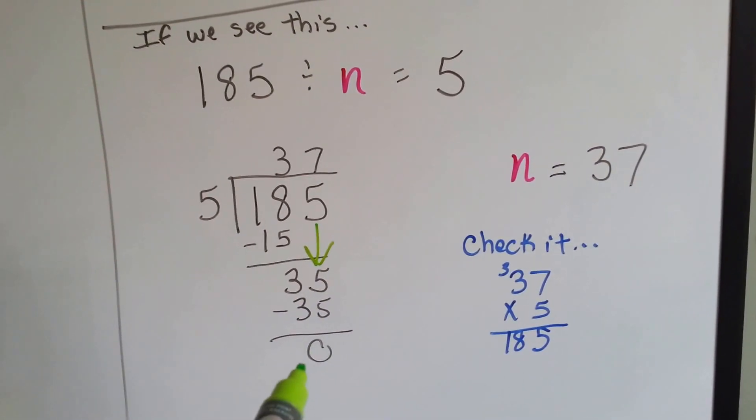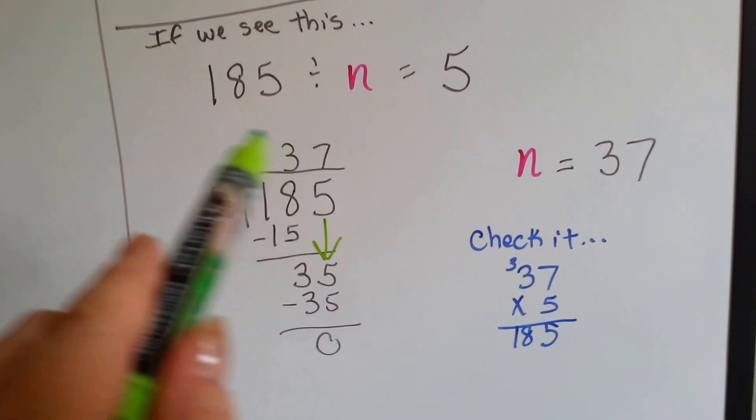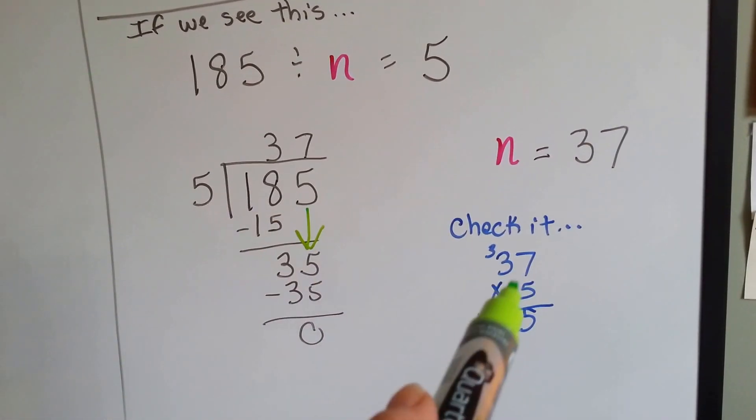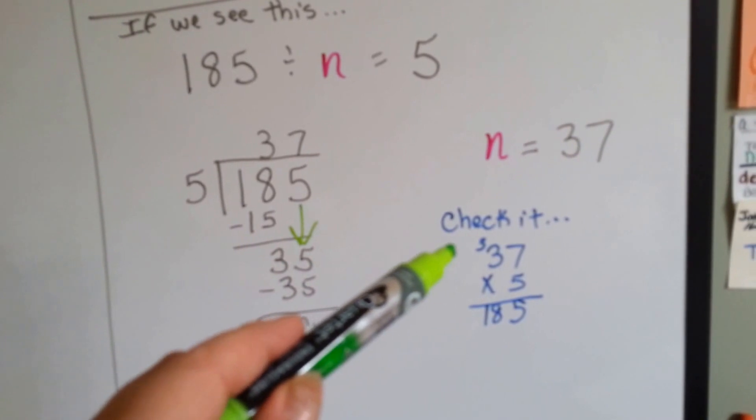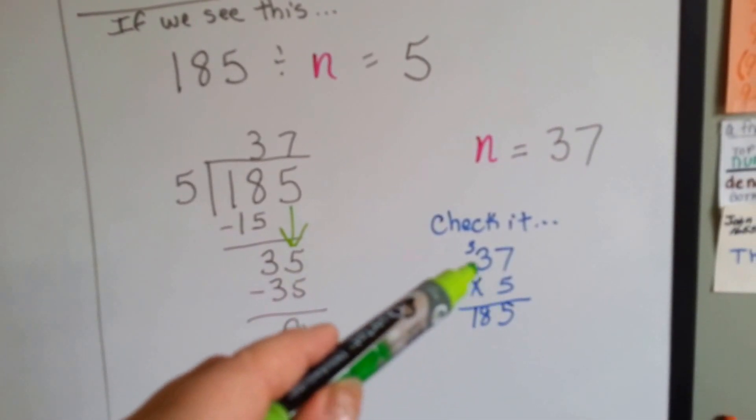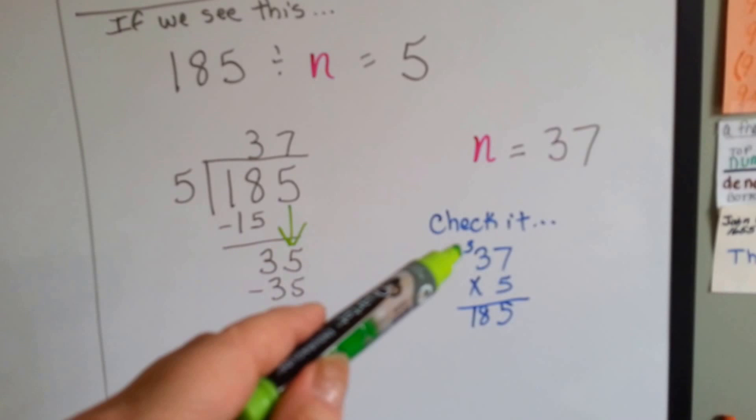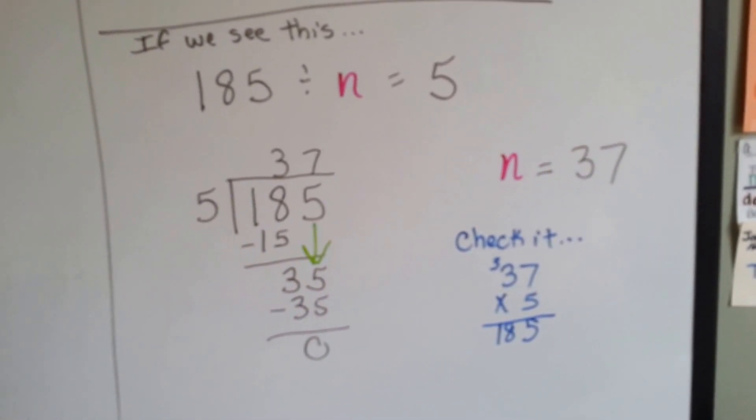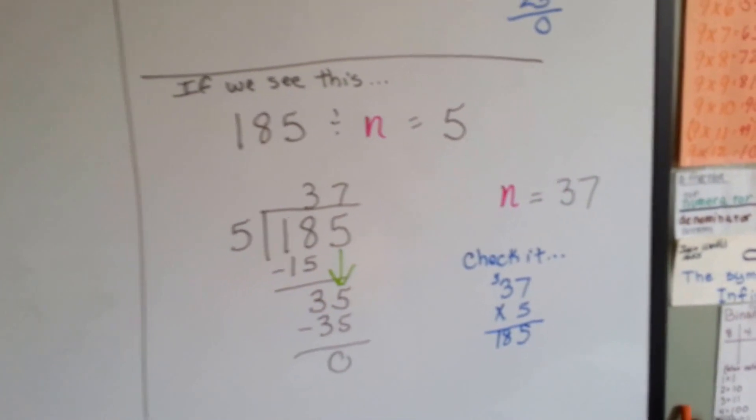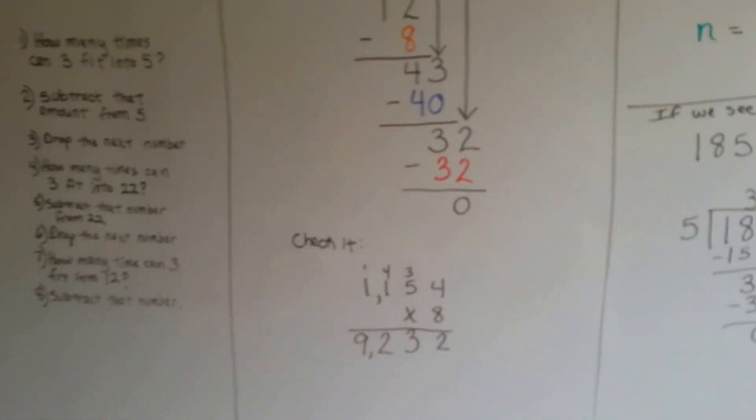We say 37 times the 5. 37 times 5. 5 times 7 is 35. We carry the 3 and put the 5 down. 5 times 3 is 15, 16, 17, 18. 185. And that's what our dividend is. We know n is equal to 37. And we did it correctly.